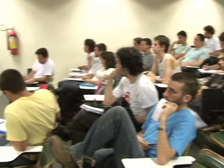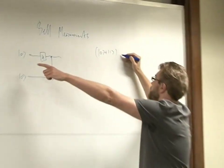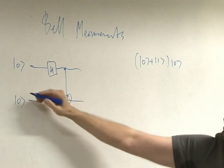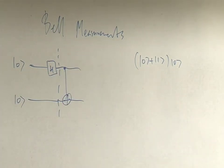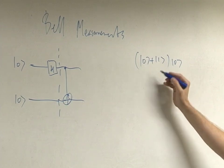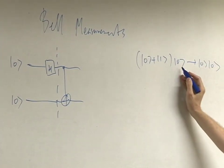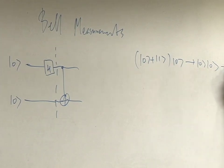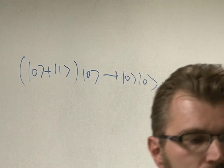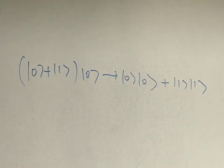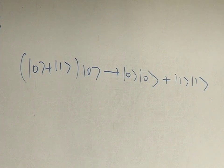The Hadamard flips this guy into a state zero plus one. After the first Hadamard gate, you do a control NOT. Zero-zero doesn't do anything. But one-zero flips to one-one. And here's an entangled state — I'm starting from a product state and I'm getting an entangled state.